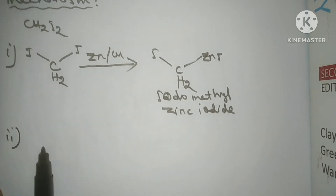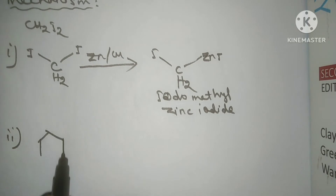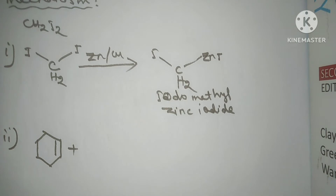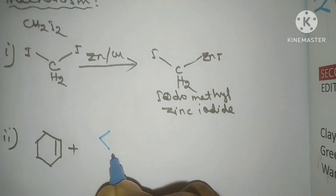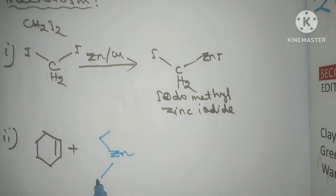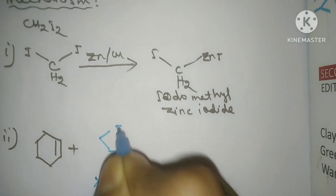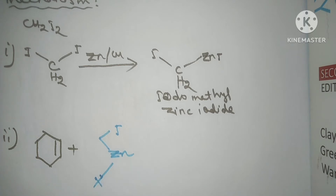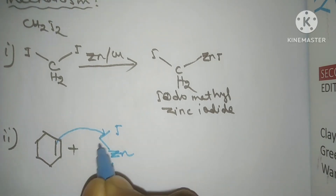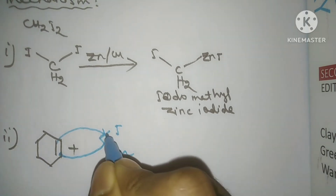Now let's focus on step two. So we had cyclohexene, and now it reacts with the Simmons-Smith reagent. This is the structure of the Simmons-Smith reagent.